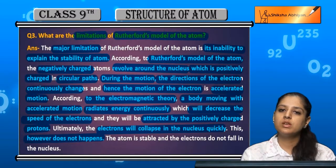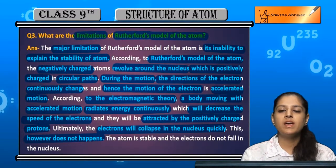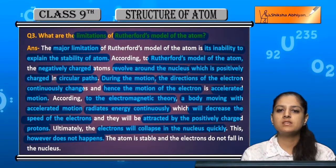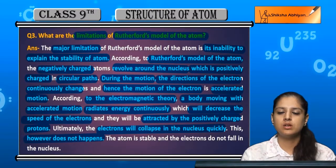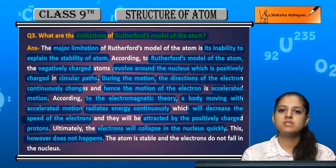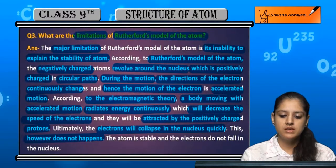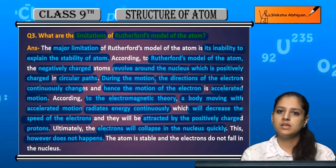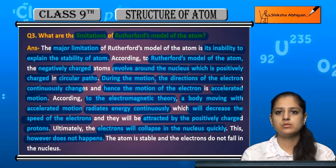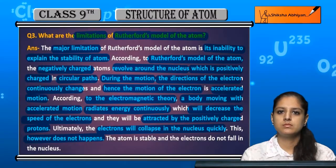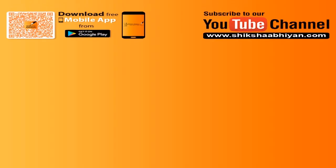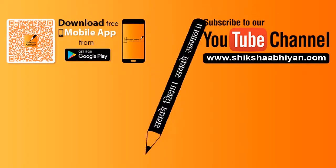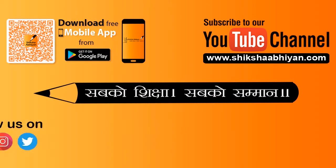So the question is: why is the atom stable? Why don't electrons collapse? This is the core limitation of Rutherford's model — it cannot explain the stability of atoms.